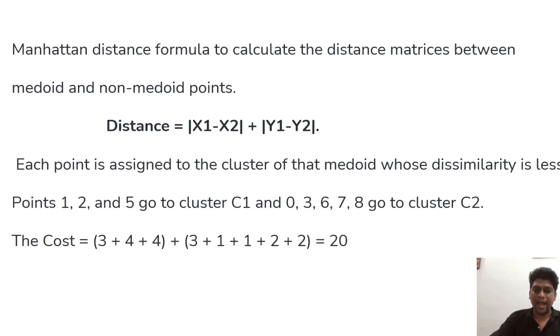With the help of the Manhattan distance formula we calculate the matrices between Medoid and non-Medoid points. So this is the formula that we used. X1 minus X2 plus Y1 minus Y2. Assign each point to the cluster of that Medoid so that the dissimilarity becomes minimum.